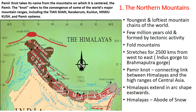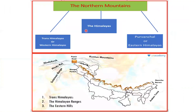The Himalayas extend in an arch shape eastwards. The word 'Himalayas' is a Sanskrit word meaning 'abode of snow.' The northern mountain is further classified into three: the Trans-Himalayas, also called Western Himalayas; the Himalayas; and Purvanchal, also called Eastern Himalayas.